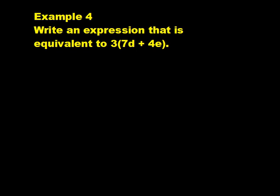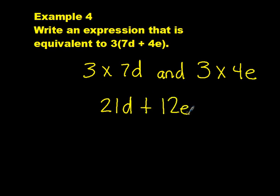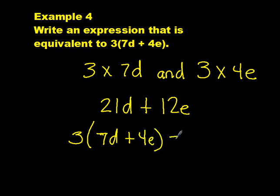Example 4. Write an expression that is equivalent to 3 times the sum of 7d plus 4e. First, we will multiply 3 times 7d and 3 times 4e. We end up with 21d plus 12e. So, 3 times the sum of 7d plus 4e is equal to 21d plus 12e.